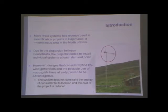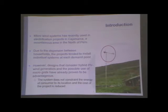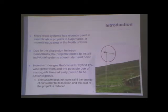As Laia explained yesterday, some microgrid systems have been recently implemented in communities of Peru. And because of the dispersion of these communities, a manual design tends to use individual systems. However, if we consider the possibility of microgrids and also hybrid technology — PV and wind technology — we can obtain several benefits. For instance, we can reduce the cost of the initial investment and also we don't constrain the energy available in a household according to its location.